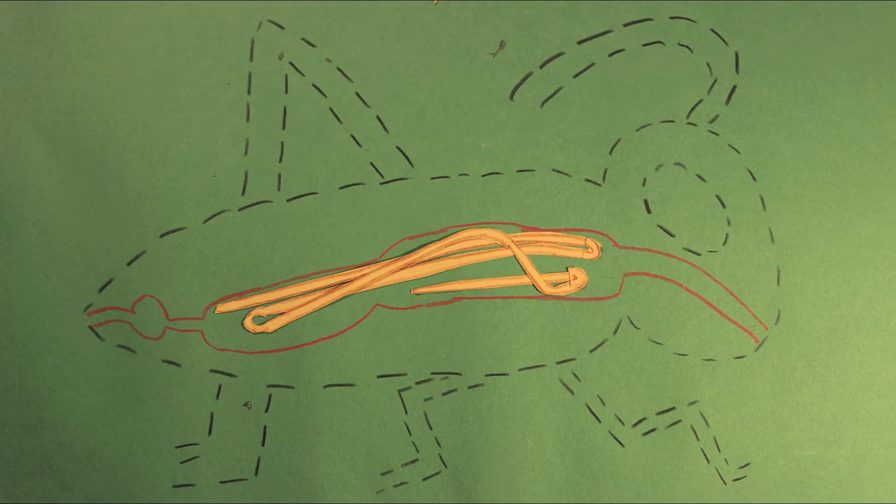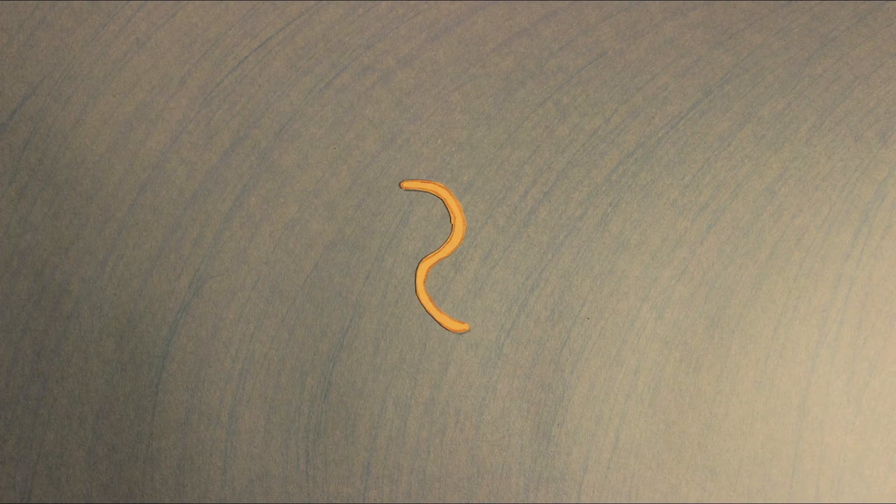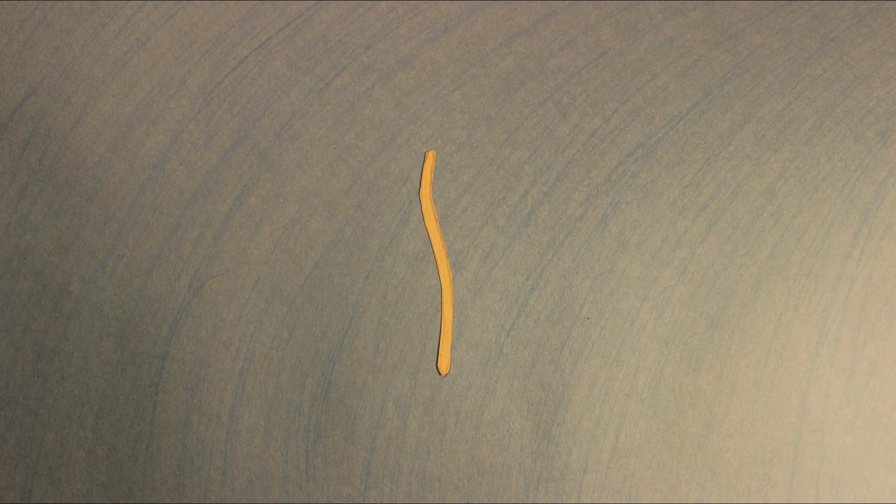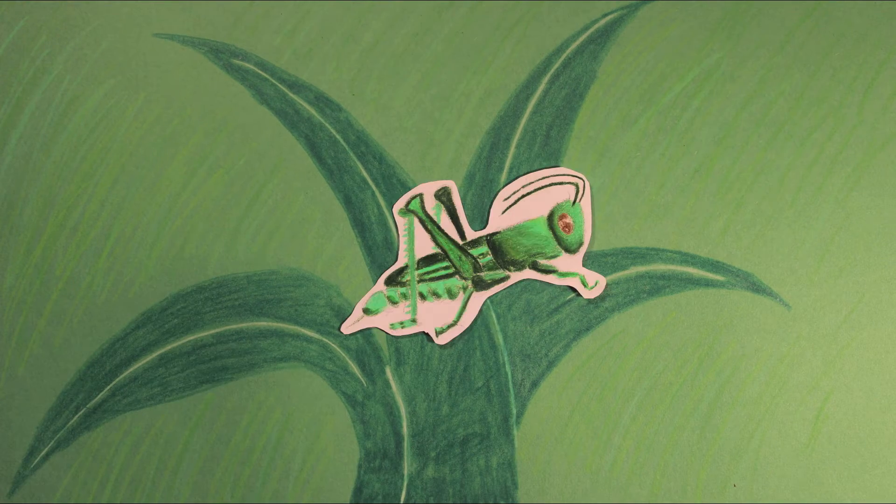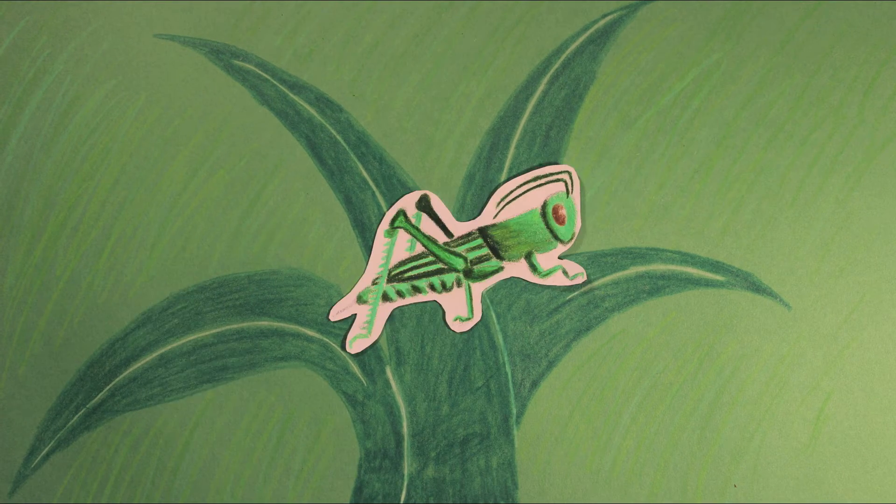Despite leaving its food supply, the hairworm will have to return to the water for mating and producing the next generation. To get back to the water, hairworms insidiously manipulate their cricket hosts. This happens in two major steps.